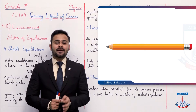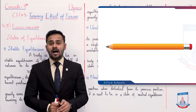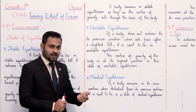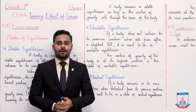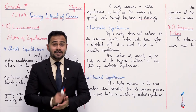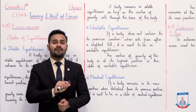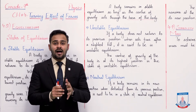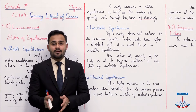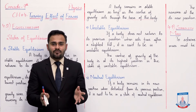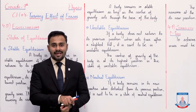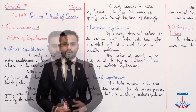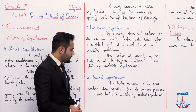In the case of unstable equilibrium, the center of gravity point is always at the highest position on the body. The center of gravity of the body is at the highest position in the state of unstable equilibrium. As soon as that pencil falls, its center of gravity point also lowers. And now that center of gravity point — it becomes a neutral equilibrium state, where it will not move further.